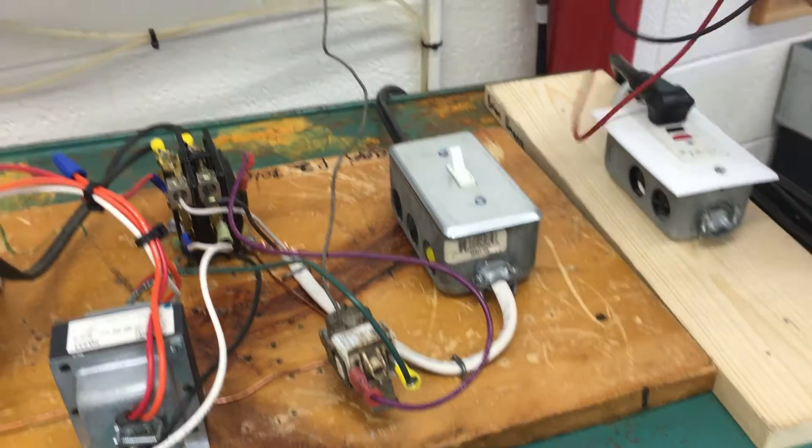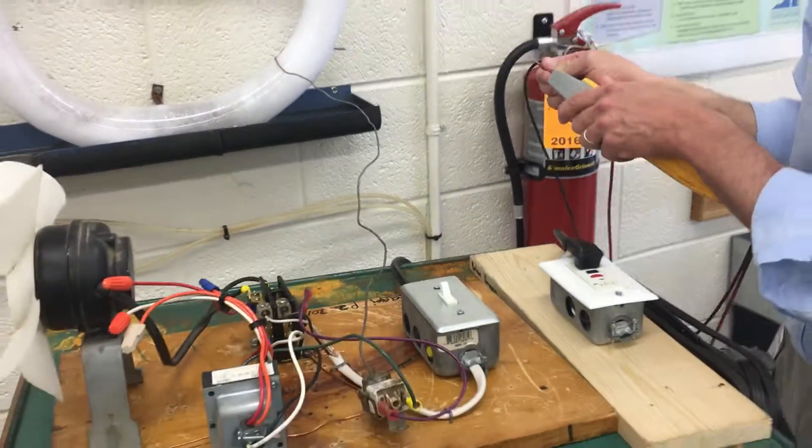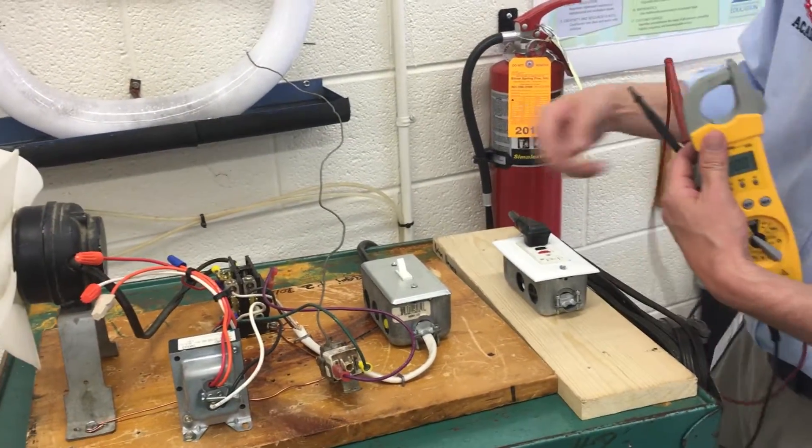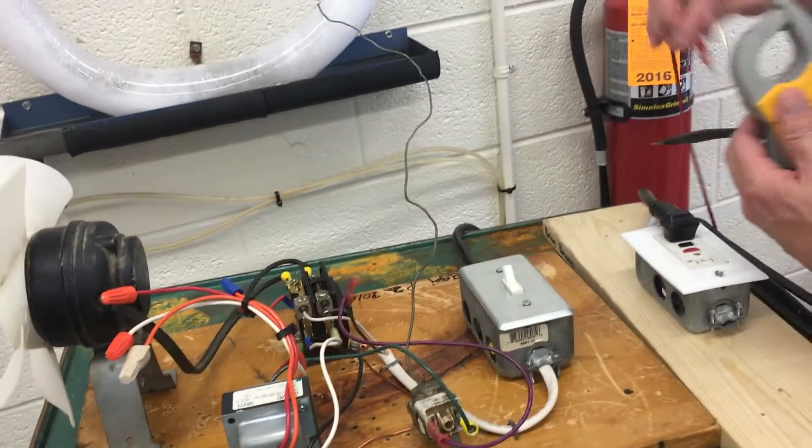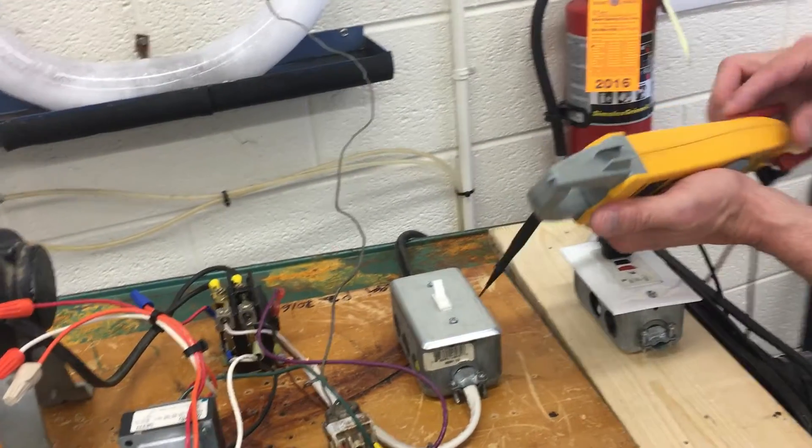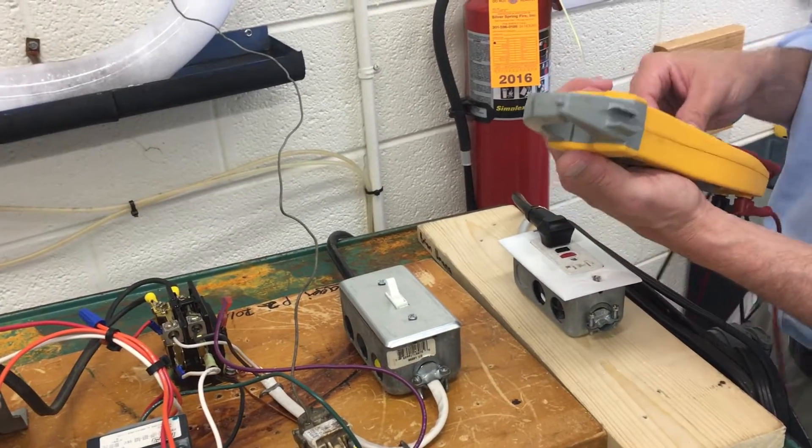And then the last thing I want to do with you is show you how to measure current. So there's a magnetic field going through the wires for the fan motor, and there's two types of current. One type is when the motor starts up, and that's going to be our locked rotor amperage.